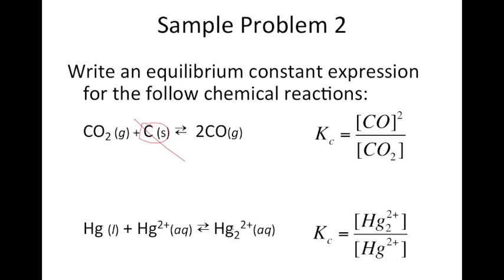For the second reaction, the Kc expression is the concentration of Hg2+ aqueous divided by the concentration of Hg2+ aqueous — both of those are aqueous so we include them. However, the mercury liquid is not included because, again, pure liquids have a constant concentration and are not included in the Kc expression.